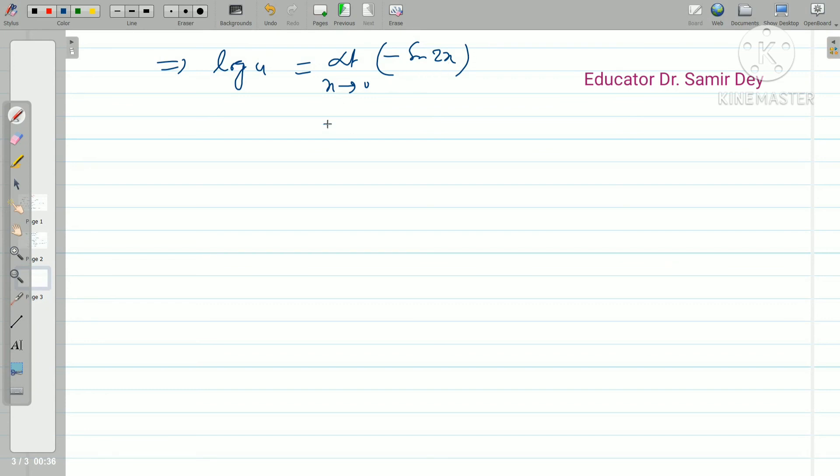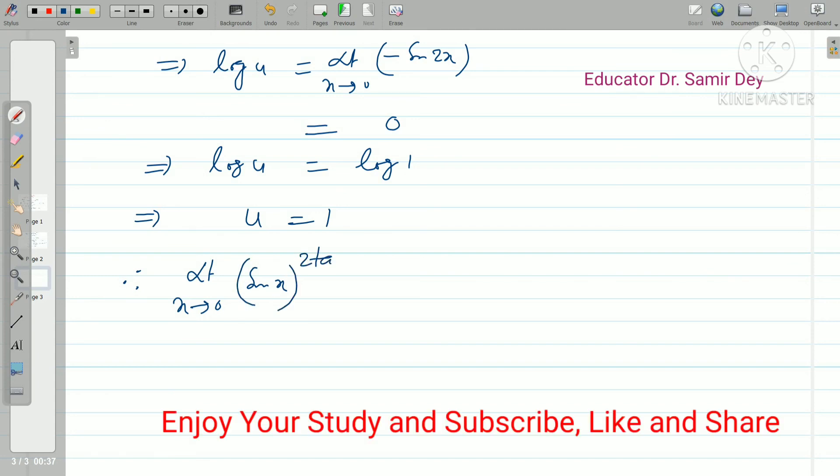So basically what you have: log u equals limit x tends to 0, minus sin 2x. If you take limit value 0, then what you have: sin 0 is 0. So from here you may write log u equals log 1, because you know log 1 equals 0. This implies u equals 1. What is u? That is limit x tends to 0, sin x to the power 2 tan x equals 1. This is the answer.